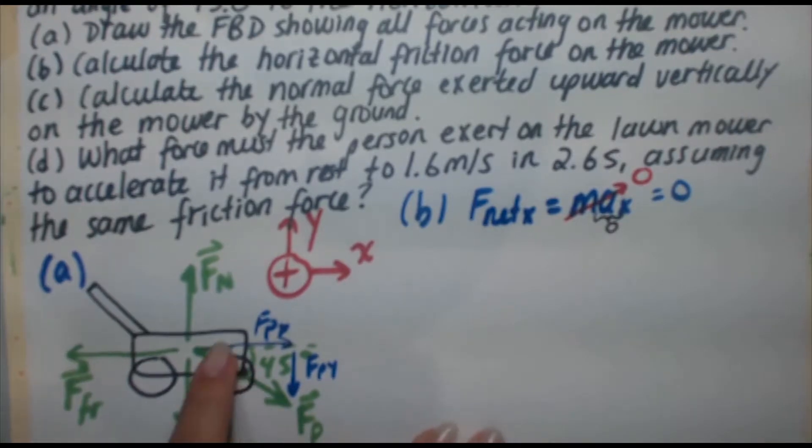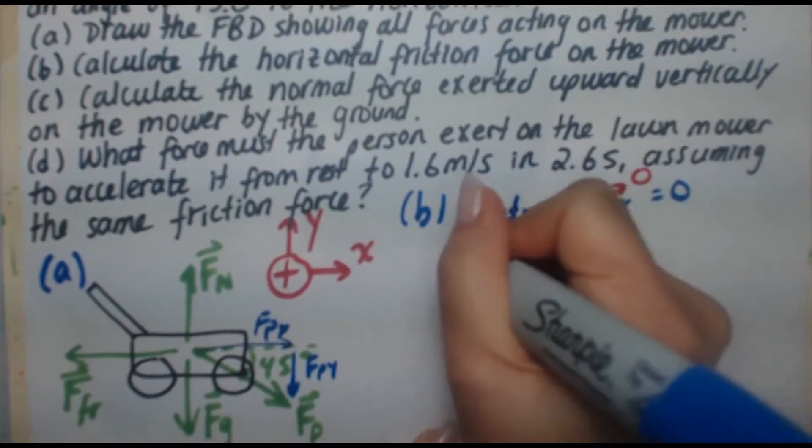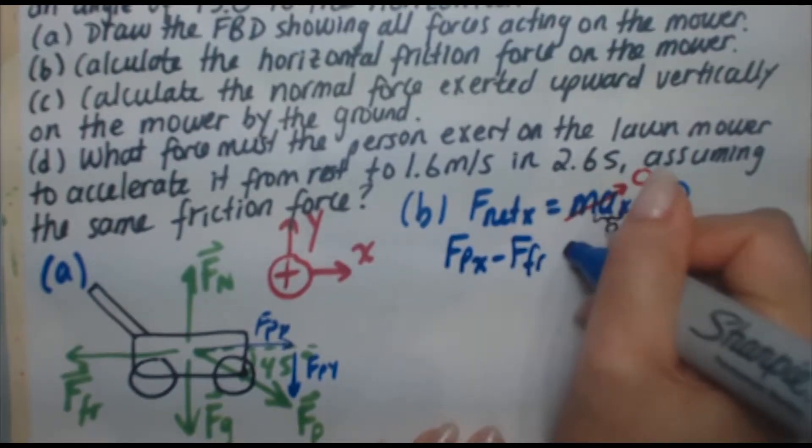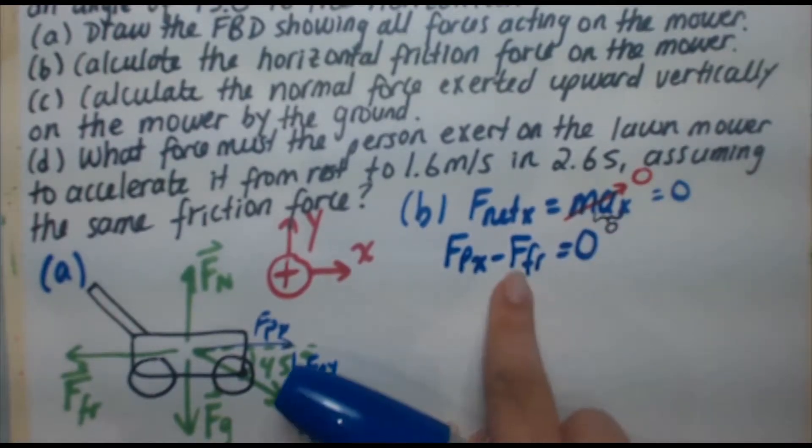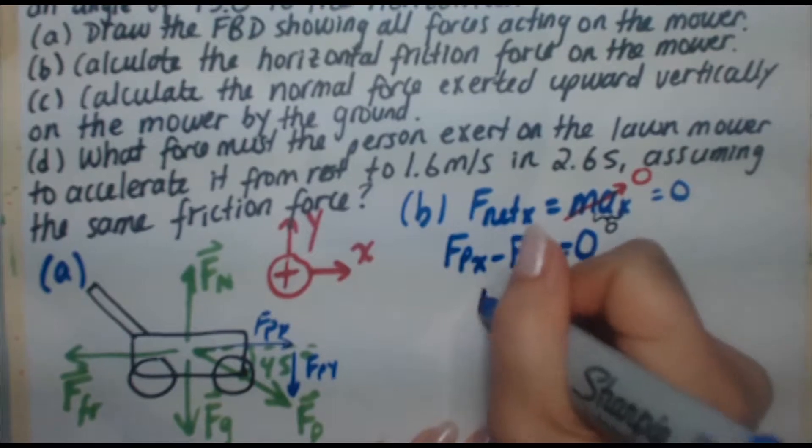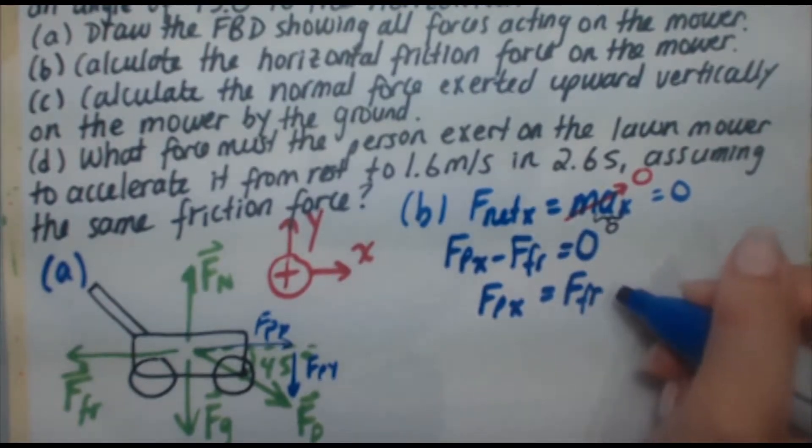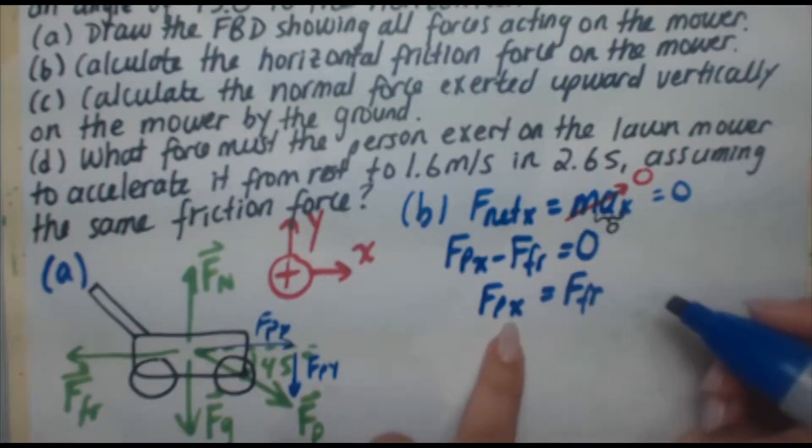Now, in the x direction, we've got FPx minus F friction. And that's equal to zero. So let's bring the friction to the right side, making it positive. FPx is equal to force of friction. Now, FPx, how do we find that?